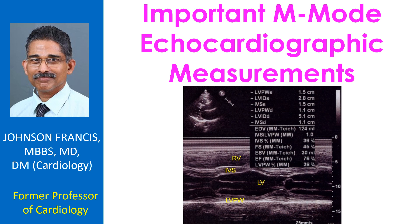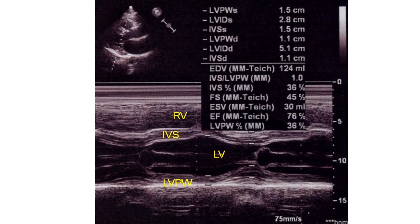M-mode echocardiography has good temporal resolution. Hence, measurements of the left ventricle are often taken with M-mode. End-diastolic and end-systolic volumes are estimated from these measurements. The stroke volume and ejection fraction are also calculated from these measurements.